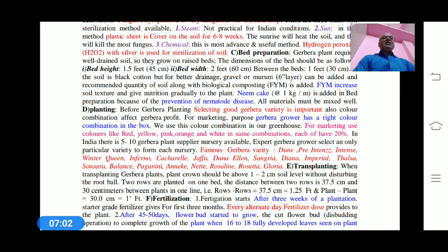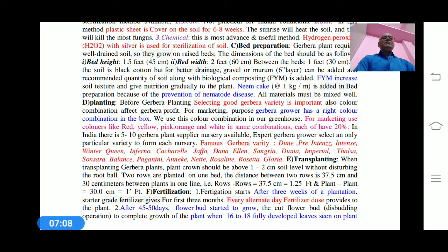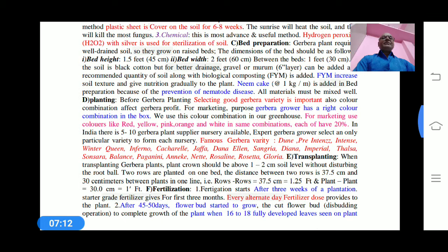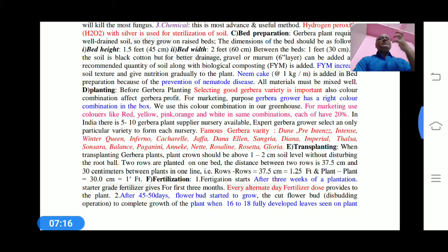For example, neem cake is always used in Indian cultivation practice, about one kilogram per meter area, added during bed preparation to prevent attack of nematodes, which cause root disease. All materials must be mixed well and then preparation of the bed is completed.